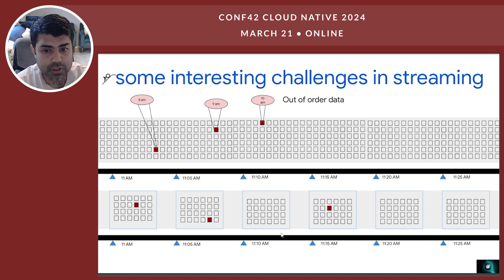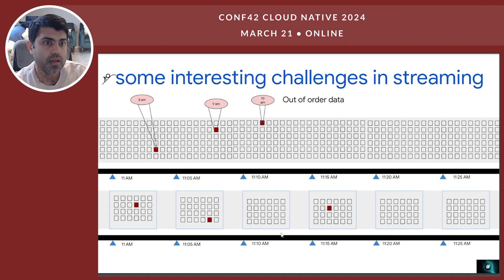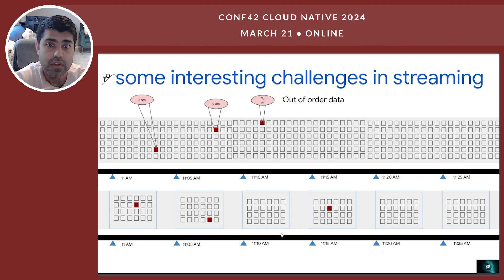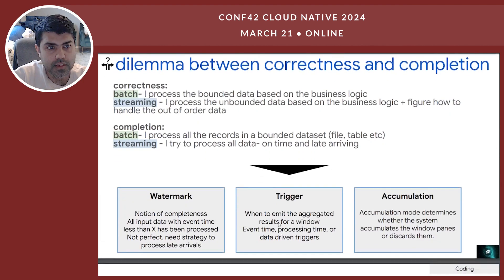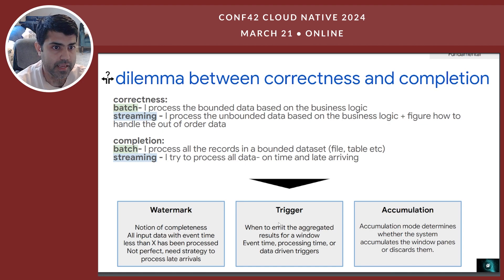Late data arises because of networking issues or bandwidth limitations between where the stream processor is and where the data originates. You will not always get the stream data in time relative to when it happened. There are many use cases where data arrives late, and this forms the basis of interesting challenges in streaming — how do we process late-arriving data, or should we process it at all?